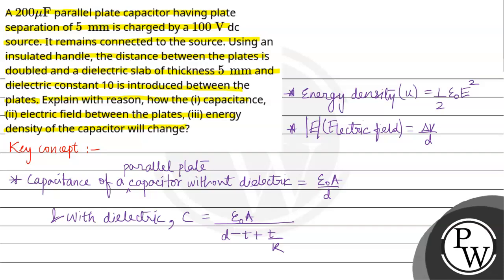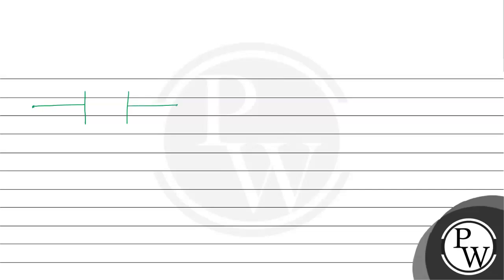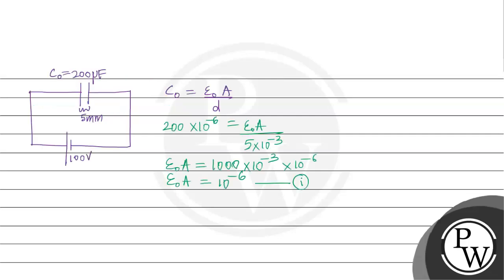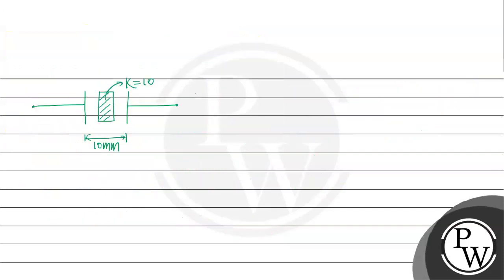The capacitor remains connected using an insulated handle. The distance between the plates is doubled and a dielectric slab of thickness 5mm and dielectric constant 10 is introduced within the plates. So the source is still connected, plate separation is doubled, and then we have a dielectric inserted. The new plate separation D' is doubled from 5mm to 10mm. The dielectric constant is 10 and the thickness is 5mm.